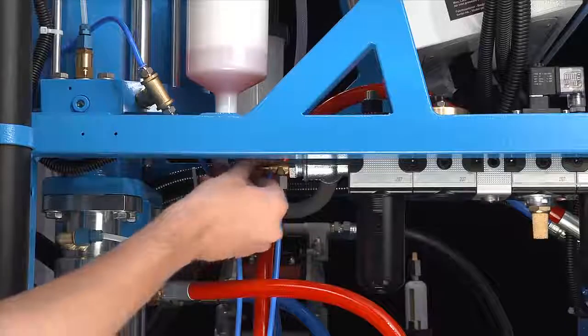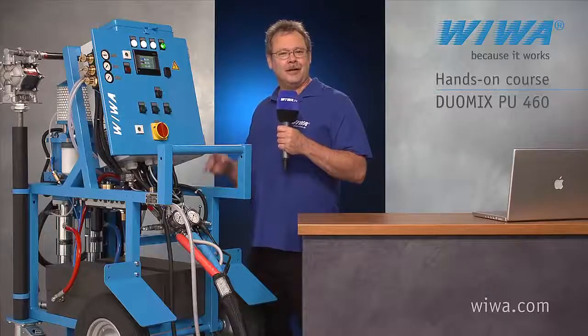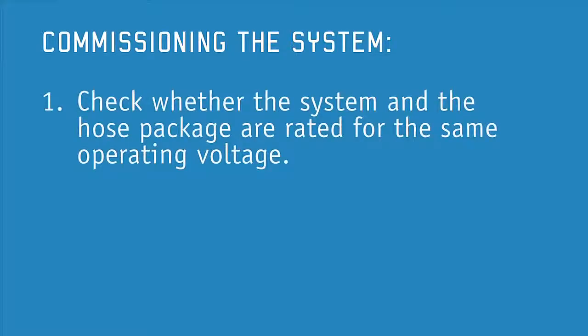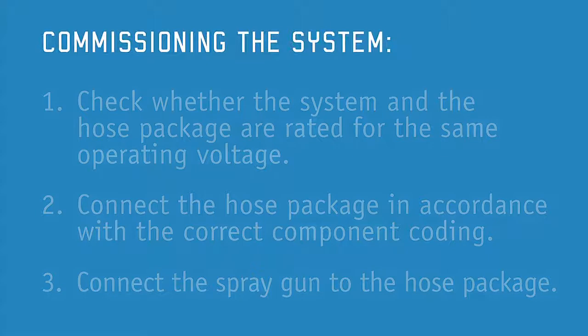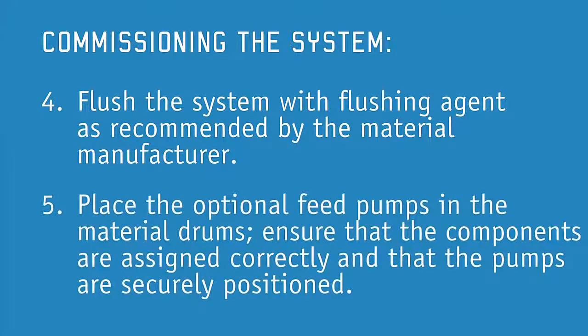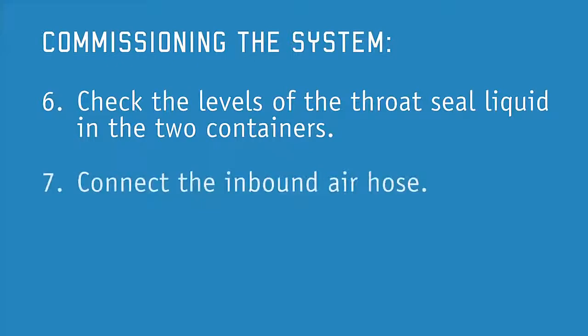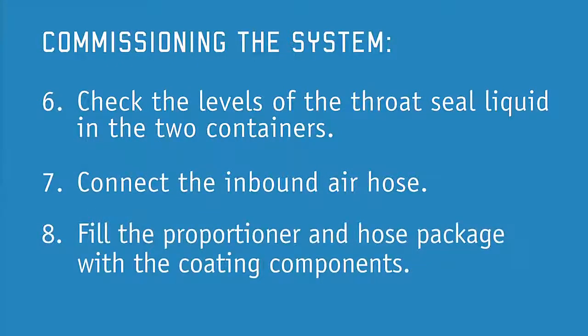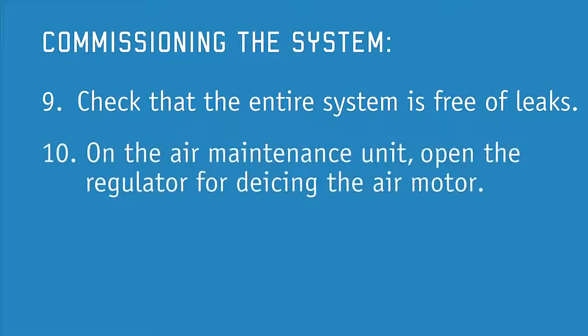The next step is to open the regulator on the maintenance unit for de-icing the air motor. The de-icing may stay open over the lifespan of the equipment. Now let's briefly summarize the last few steps. Check whether the system and the hose package are rated for the same operating voltage. Connect the hose package in accordance with the correct component coating. Connect the spray gun to the hose package. Flush the system with flushing agent as recommended by the material manufacturer. Place the optional feed pumps in the material drums. Ensure that the components are assigned correctly and that the pumps are securely positioned. Check the levels of the throat seal liquid in the two containers. Connect the inbound air hose. Fill the proportioner and hose package with the coating components. Check that the entire system is free of leaks. On the air maintenance unit, open the regulator for de-icing the air motor.